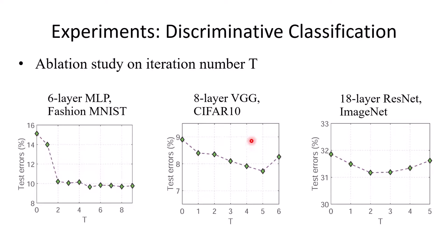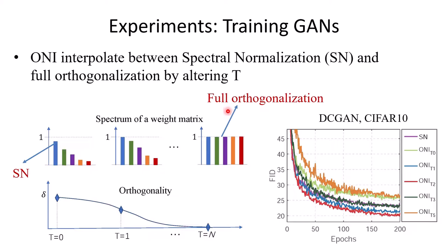We explore the effect of the iteration number on different datasets and architectures. Our main conclusion is that controlling the orthogonality is necessary to achieve good performances for more complicated networks and datasets.